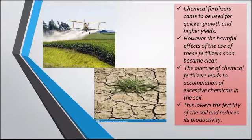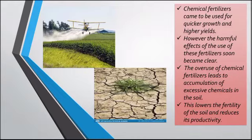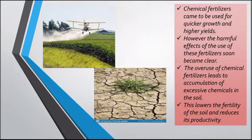Sometimes, to get a good yield in a shorter period of time and to have a good income, many farmers use chemical fertilizers that help for quicker crop growth and higher production. The farmer can earn a good income selling these crops earlier in the market. However, the harmful effects of chemical fertilizers are clear — overuse leads to accumulation of excessive chemicals in the soil. This decreases the fertility of the land, meaning the farmer may not get a proper yield the next time they use the land.